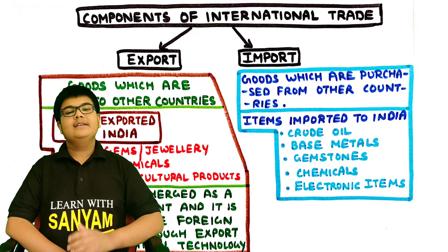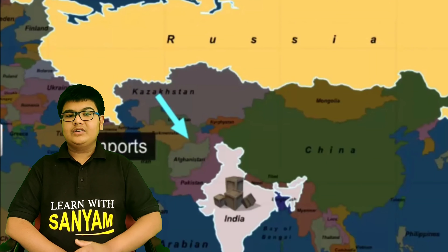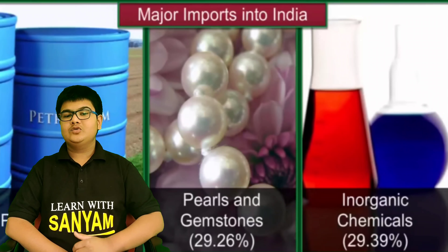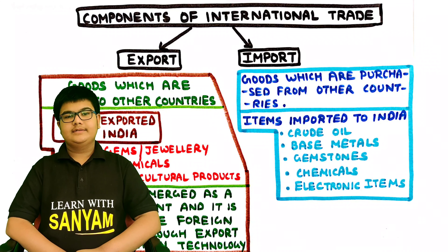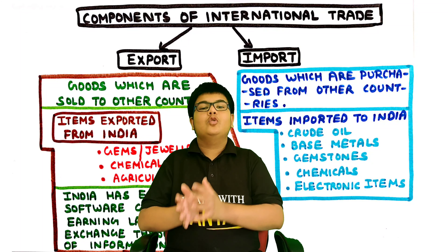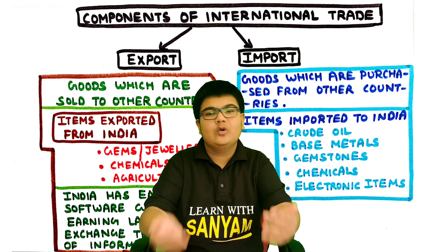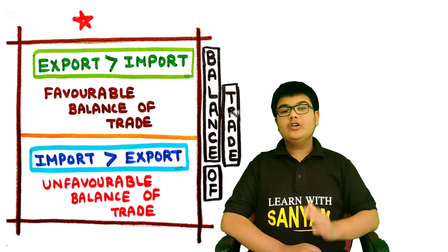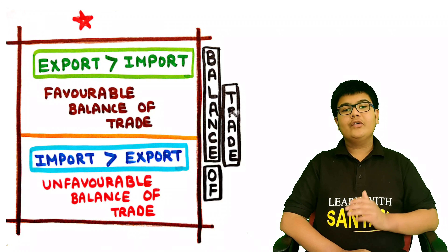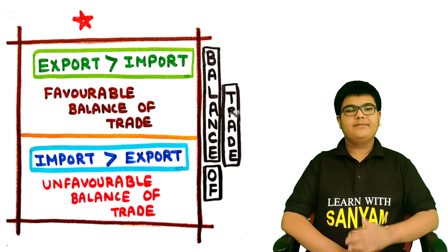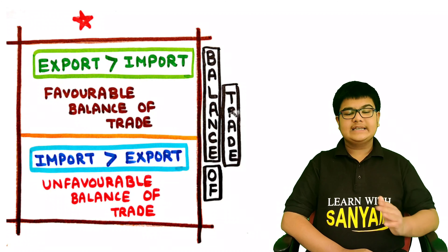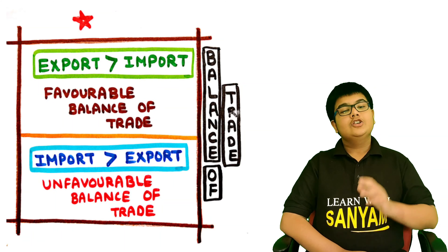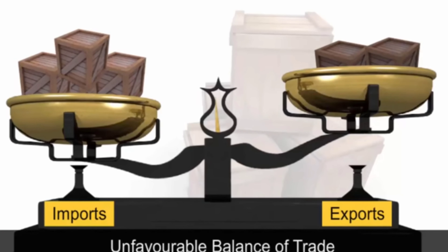The second component is import — goods purchased from other countries. Items imported to India include crude oil, base metals, gemstones, chemicals, electronic items, etc. Export means sending out goods to other countries while import means bringing in goods from other countries. Regarding the balance of trade: if the amount of export is greater than the amount of import, it is known as a favorable balance of trade. If import is greater than export, it is unfavorable.